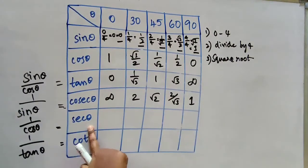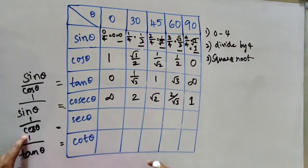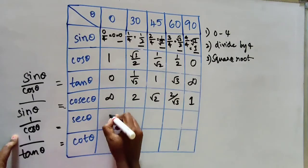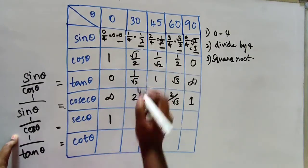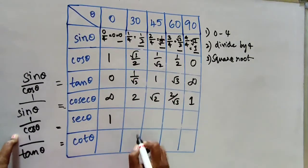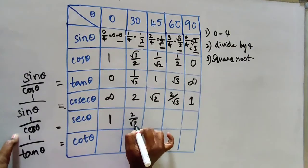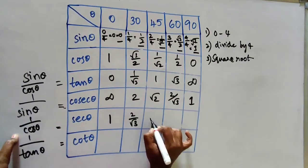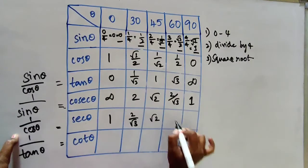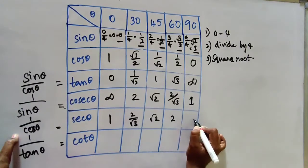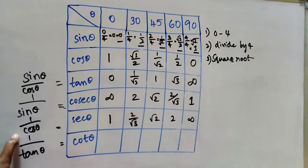Secant theta equals 1 by cos theta. So secant 0 = 1/1 = 1, secant 30 = 2/√3, secant 45 = √2, secant 60 = 2, and secant 90 = infinite.